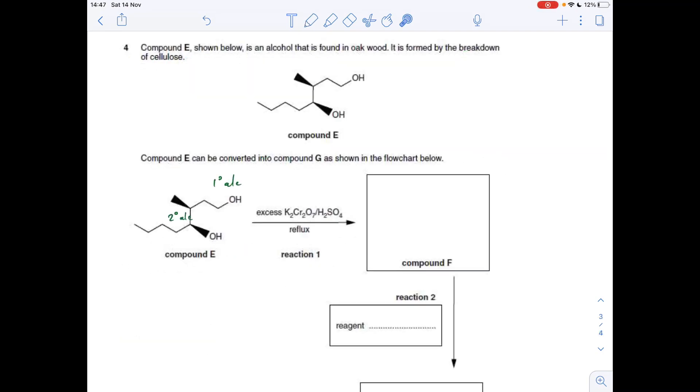Question 4 now. You can see I've written up the functional groups in compound D. We've got secondary alcohol here and we've got a primary alcohol here. So if you react it under reflux with excess K2Cr2O7, H2SO4, obviously that's an oxidizing agent, it's going to oxidize this secondary alcohol group to a ketone, and it's going to oxidize under reflux the primary alcohol to the carboxylic acid.